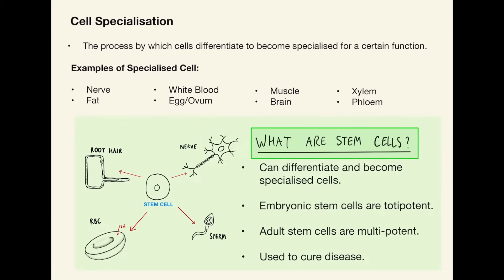Cell specialisation and stem cells. Cell specialisation is the process by which cells differentiate to become specialised for a certain function. Examples of specialised cells you would almost definitely have heard of include nerve cells, fat cells, muscle cells, brain cells, and others on the slide. There are also diagrams showing what cells can become — examples of specialised cells such as a root hair cell, a nerve cell, a red blood cell and a sperm cell.